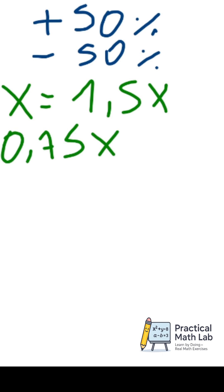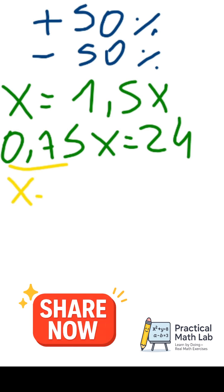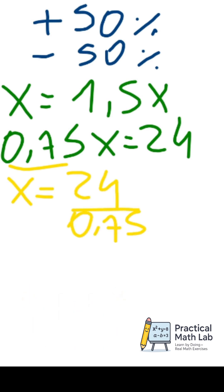If 0.75x equals 24, now you just have to solve this. Move this multiplication to the other side by dividing, so x equals 24 divided by 0.75. x equals 32. That's the initial number.